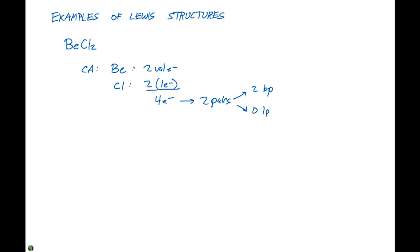When we draw this, our Be is going to form a bond to each of the chlorines, and the chlorine is going to have its octet of electrons around it. This is how we would draw the structure for BeCl2, and this is going to be linear as it forms two bonds that are 180 degrees apart from each other.